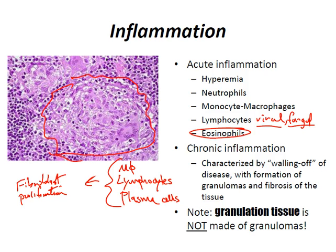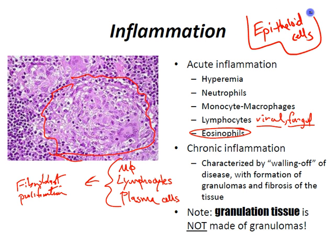New vessel formation creates scarring and distortion of tissue architecture. Granulomatous inflammation is characterized by granulomas — nodular collections of specialized macrophages known as epithelioid cells — usually surrounded by a rim of lymphocytes. The etiology of granulomatous inflammation includes Mycobacterium tuberculosis, Mycobacterium leprae, fungal infections such as Histoplasma capsulatum, Treponema pallidum causing syphilis, Bartonella henselae causing cat scratch disease, Crohn's disease, and sarcoidosis.